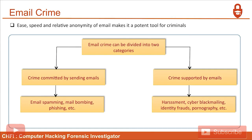Email crimes — the ease, speed, and relative anonymity of email makes it an important tool for criminals. Email crimes can be divided into two categories: crimes committed by sending emails, and crimes supported by emails. Email spamming, email bombing, and phishing fall under crimes committed by sending emails, while harassment, cyber blackmailing, identity fraud, and pornography fall under crimes supported by emails.